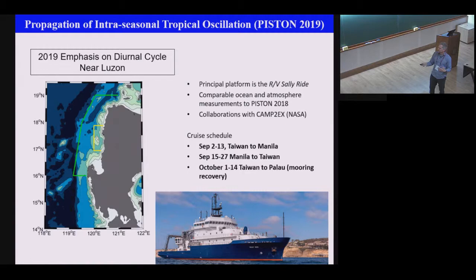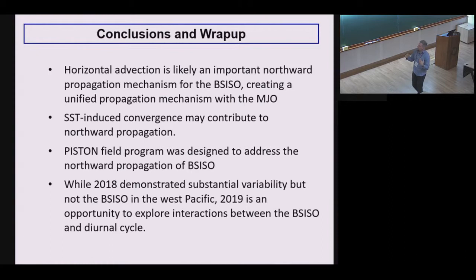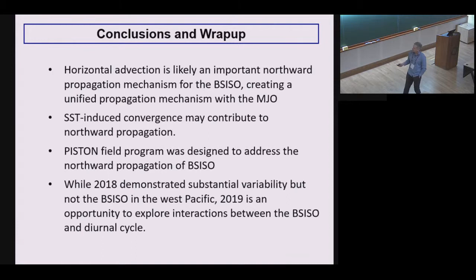To conclude: I showed that horizontal advection is likely an important northward propagation mechanism for the BSISO, creating a somewhat unified propagation mechanism with the MJO. We showed SST-driven convergence may contribute to northward propagation — there's still a lot of work to be done, but initial analysis looks promising. I also talked about the PISTON field program in 2018, and although we didn't see traditional BSISO variability, we'll have another chance in 2019 to explore interactions between the BSISO, the diurnal cycle, and the ocean. Thank you.